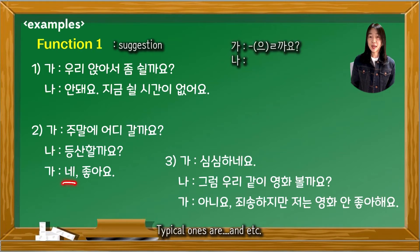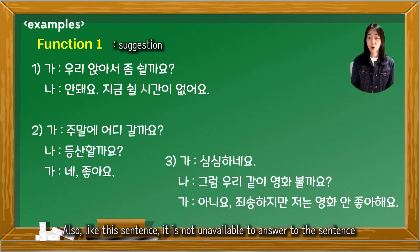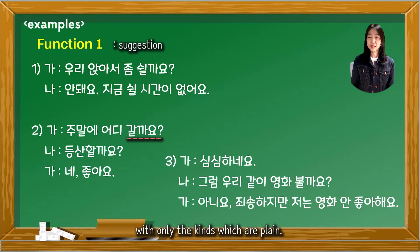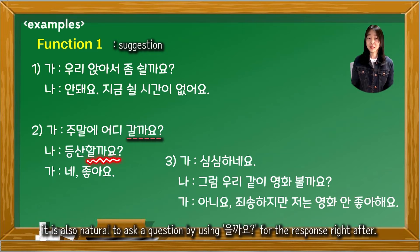Typical responses are 네 좋아요, 그래요, 미안해요, 안 돼요, etc. Also, it is not unavailable to answer the sentence with only plain kinds. As an intention to narrow the scope of the talk, it is also natural to ask a question using 을까요? as the response right after.